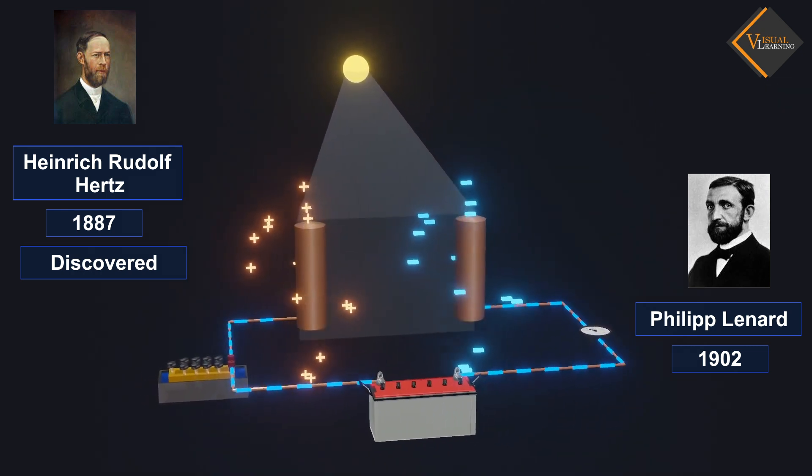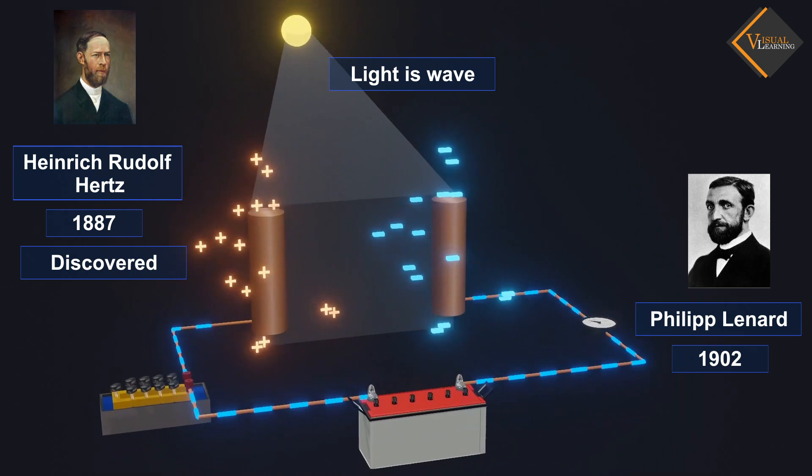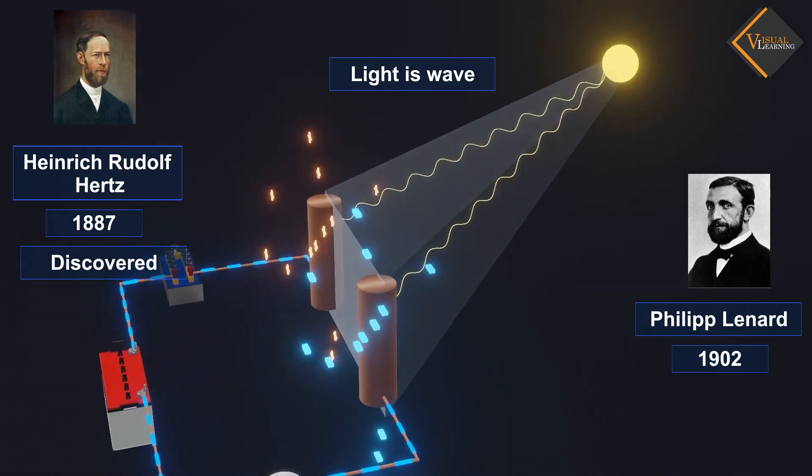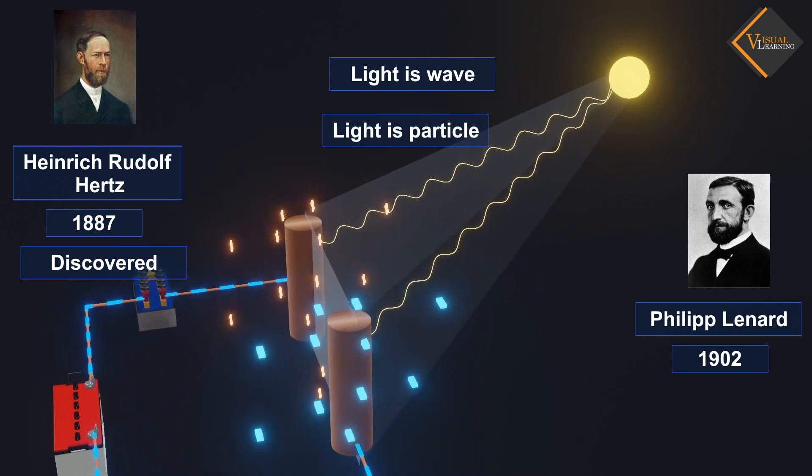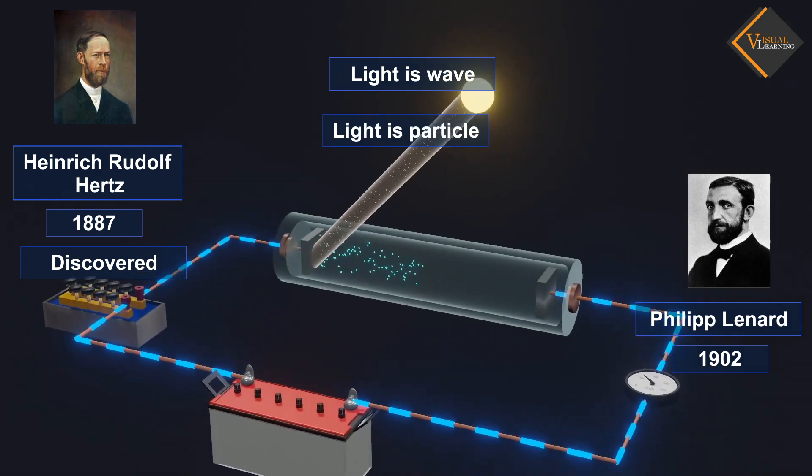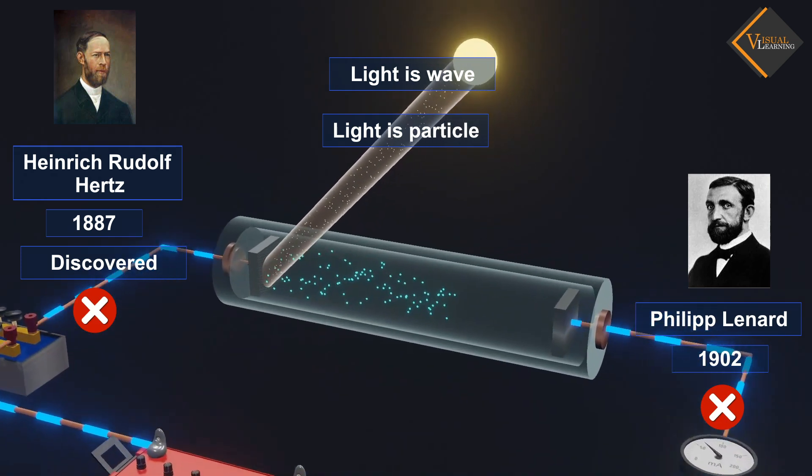Before this discovery, light was considered to be a wave. But after the discovery of the photoelectric effect, it was found that light also has particle nature. Due to this, classical physics could not explain this phenomenon.